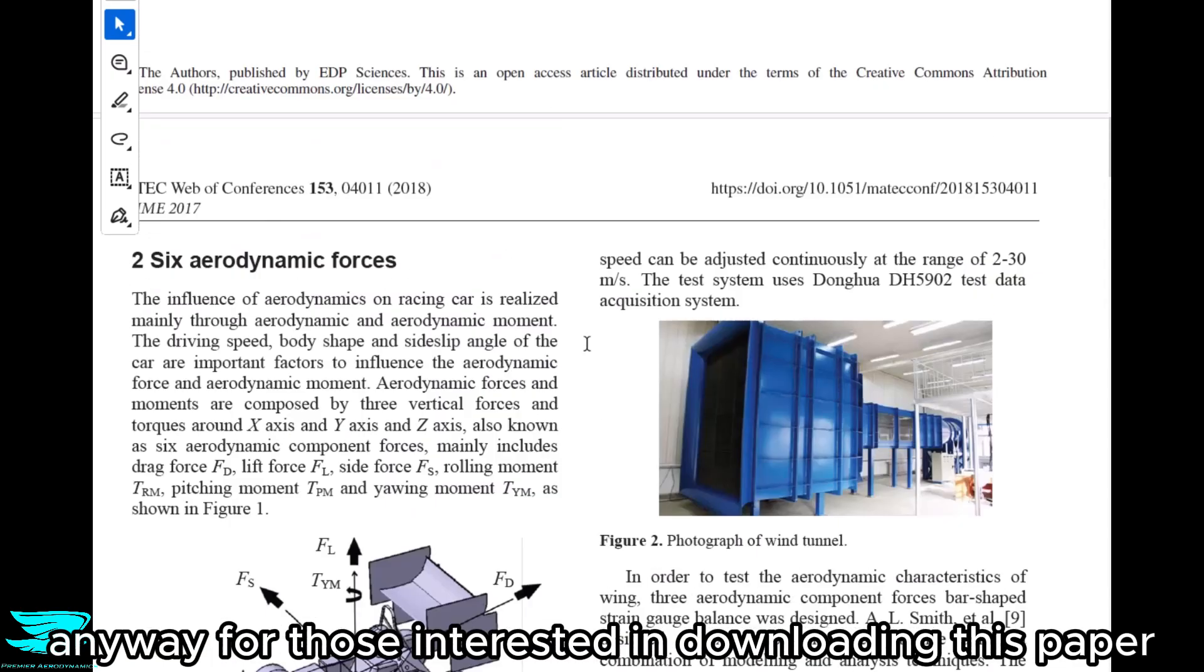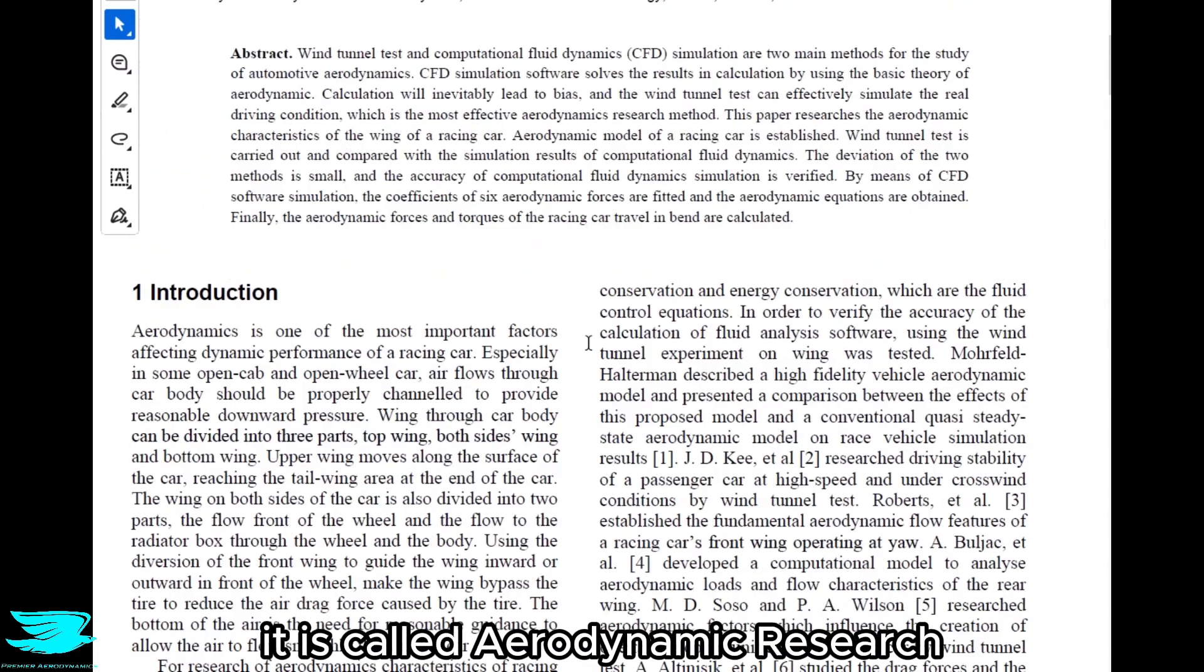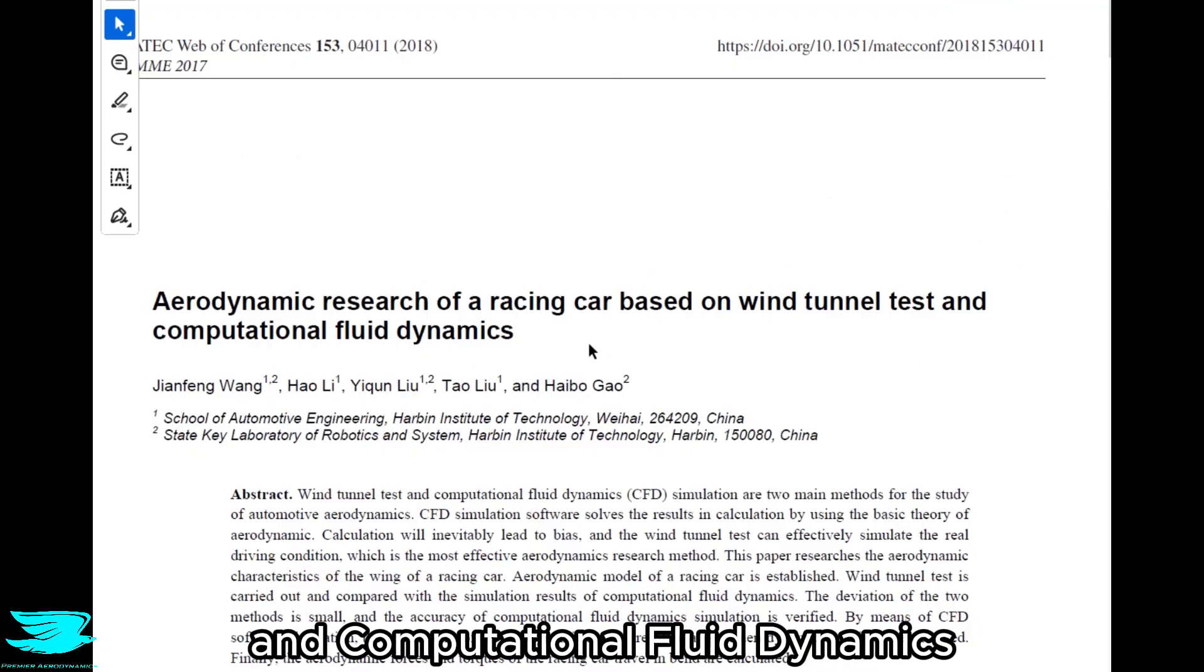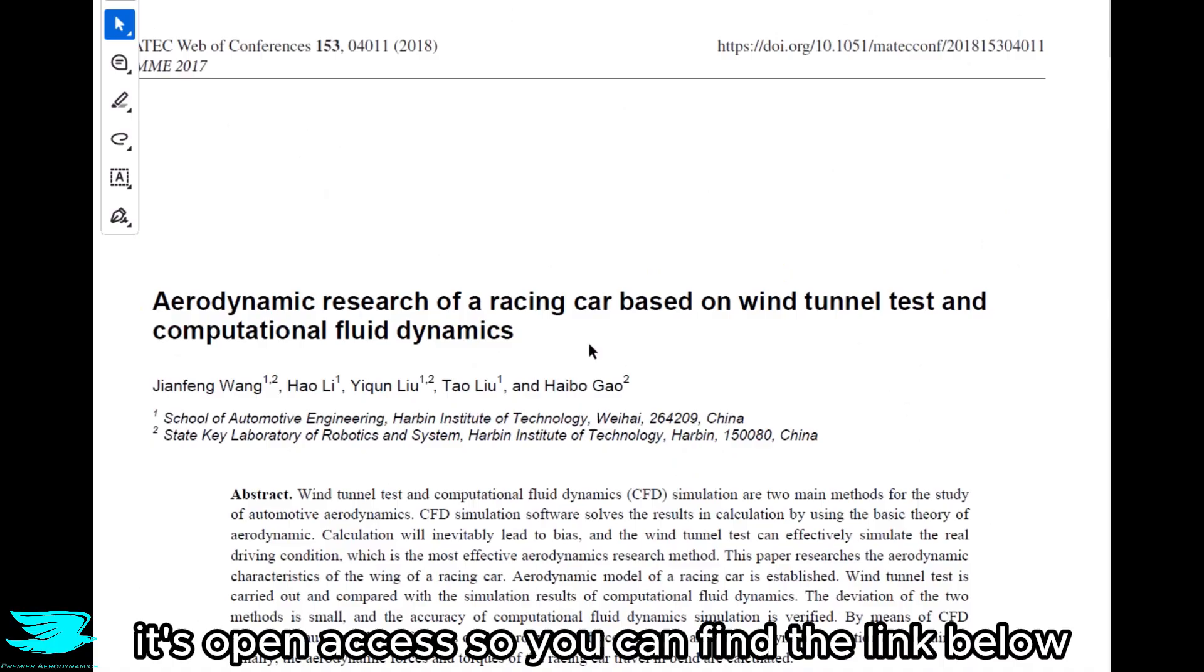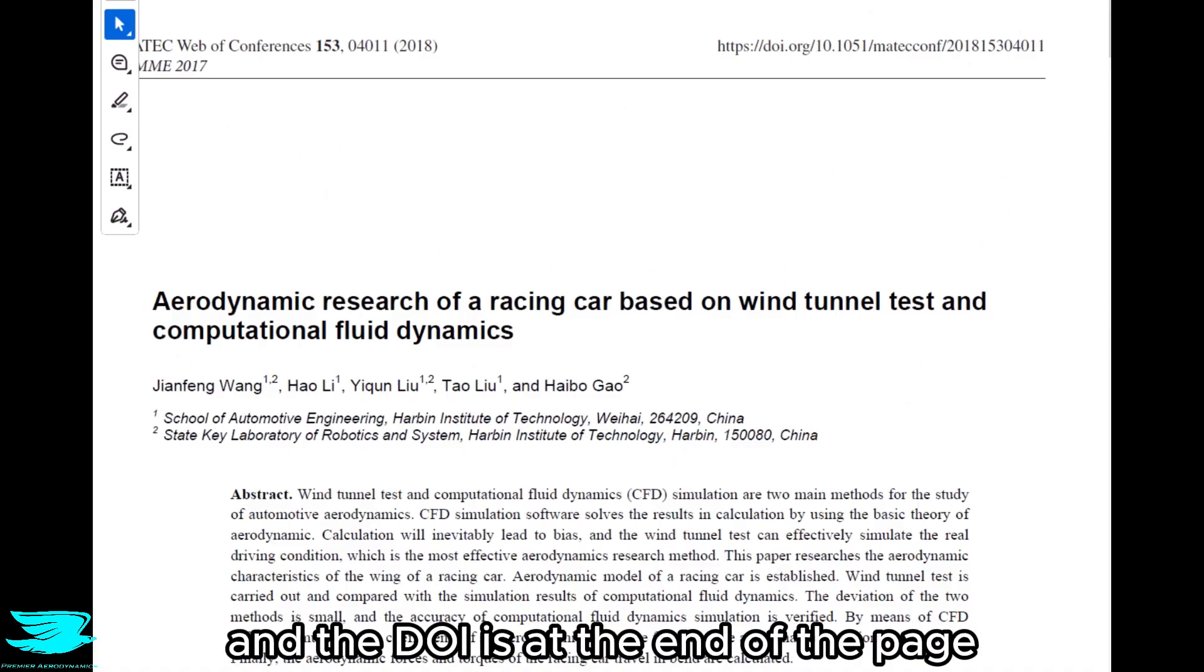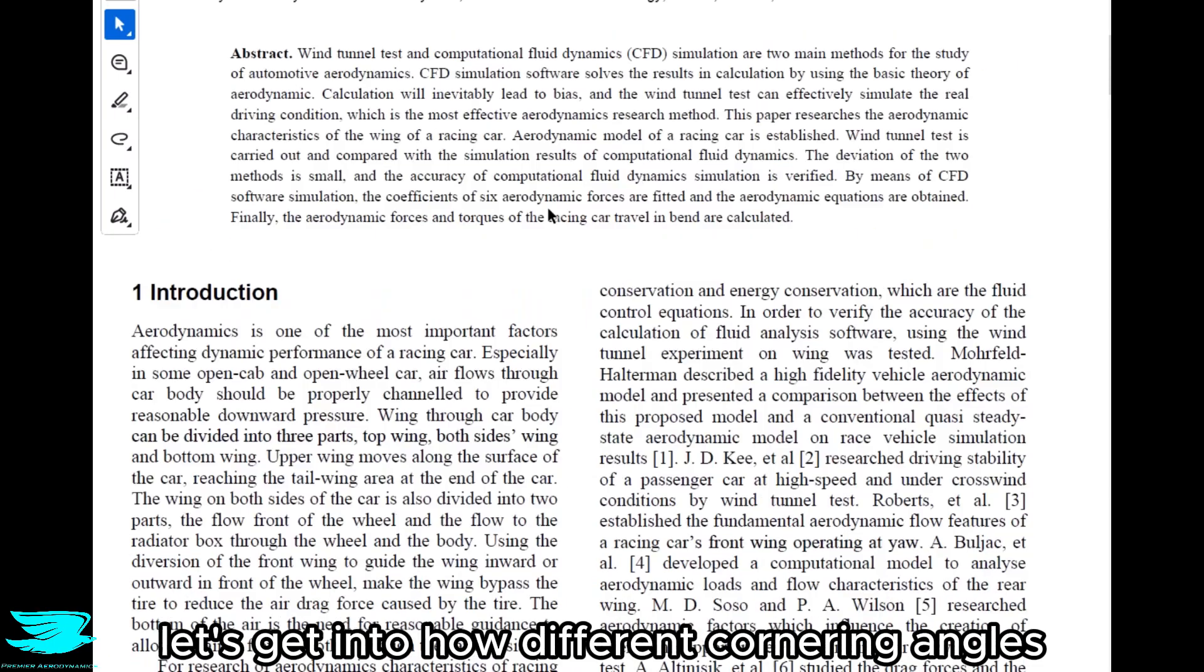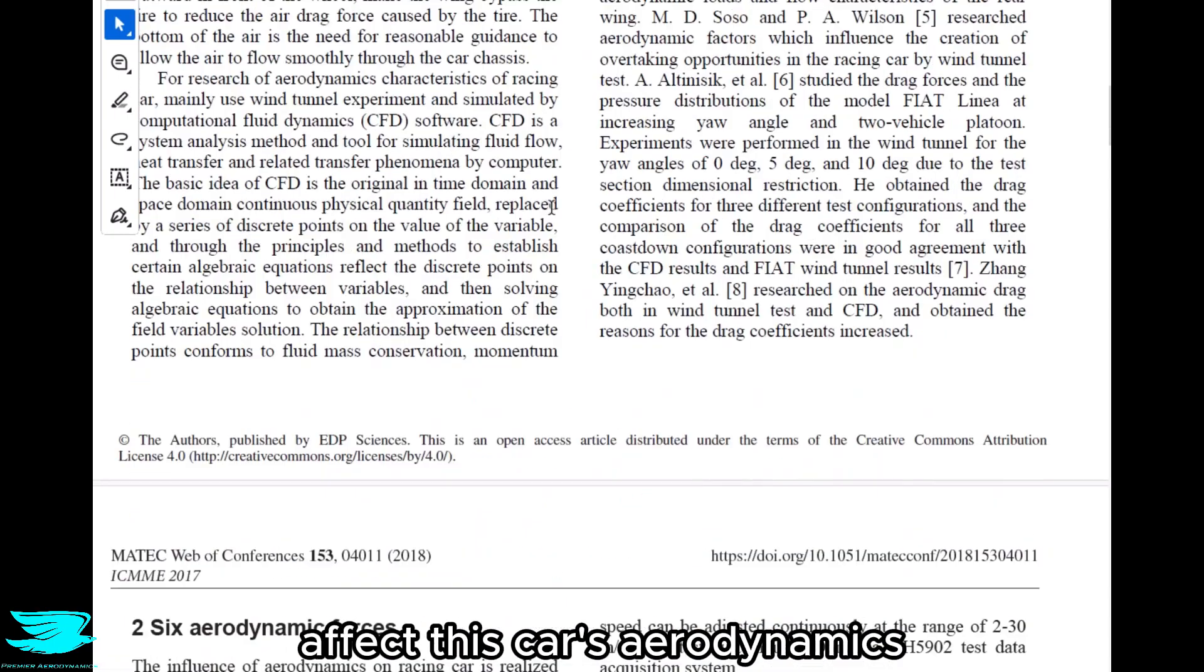For those interested in downloading this paper, it is called Aerodynamic Research of a Race Car Based on Wind Tunnel Tests and Computational Fluid Dynamics. It's open access, so you can find the link below. The DOI is at the top of the page. Let's get into how different cornering angles affect this car's aerodynamics.